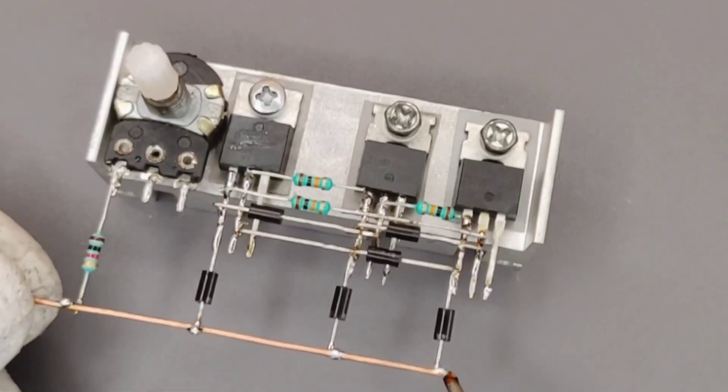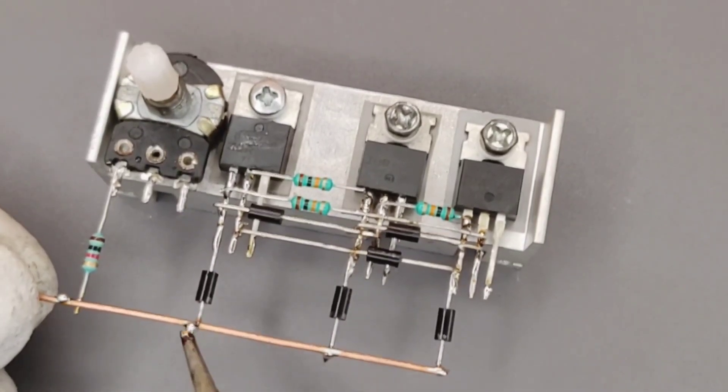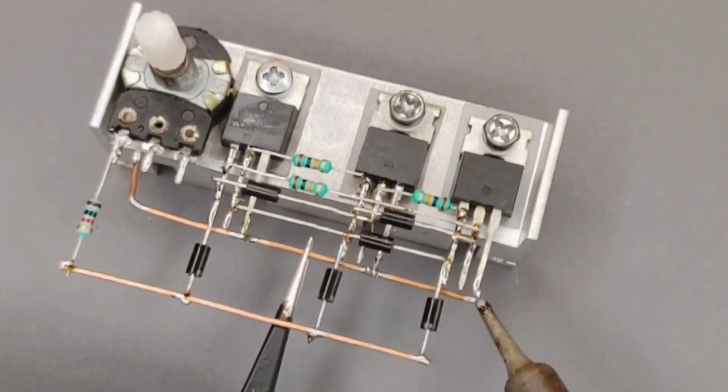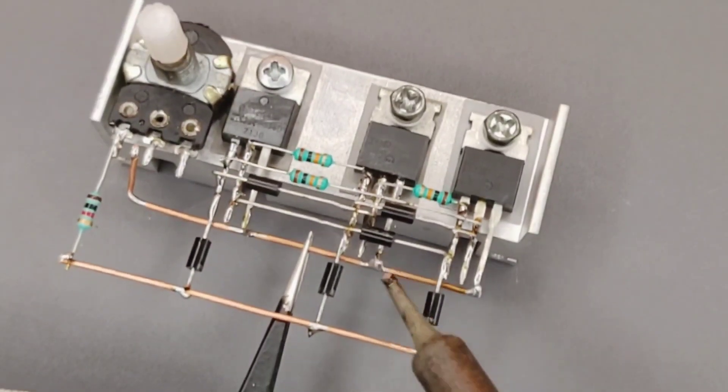Use a piece of copper wire and connect these diodes and this resistor together. Also solder all MOSFET pin 3 together with potentiometer pin 2.